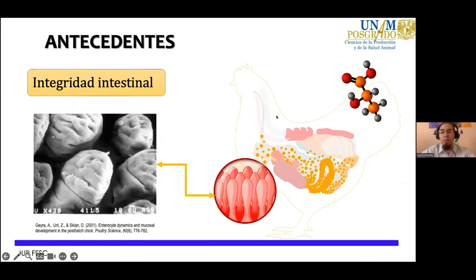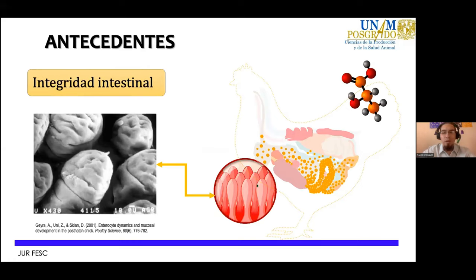Para comenzar, creo que sería bueno hablar de algunos antecedentes. El epitelio intestinal es una barrera que se presenta dentro del intestino y cuando nosotros ingerimos cualquier sustancia, ya sea alimento, agua de bebida o cualquier otra sustancia, después de que pasa por el estómago, llega directamente al epitelio intestinal. El epitelio intestinal está compuesto por vellosidades, como las estamos esquematizando en esta imagen. La imagen en blanco y negro es una fotografía de microscopio de barrido de las vellosidades, y cada una está cubierta por el epitelio intestinal.